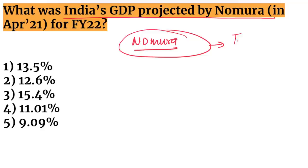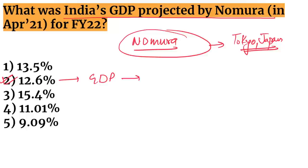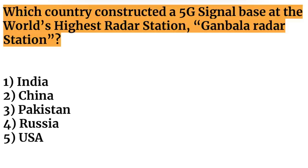Next question: what was India's GDP projected by Nomura? Nomura is a Tokyo, Japan-based company. It projected India's GDP growth rate for fiscal year 2022 at 12.6%.